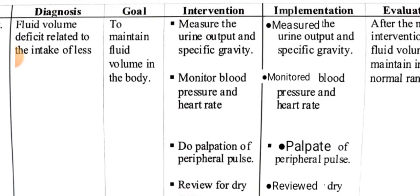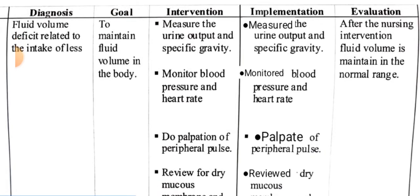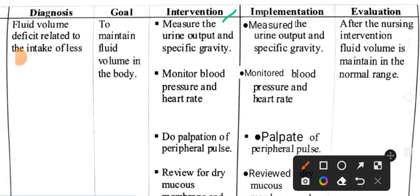The goal is to maintain fluid volume in the body. Next, interventions, implementation, and evaluation. First intervention: measure urine output and specific gravity. Implementation: measured urine output and specific gravity. Next intervention: monitor blood pressure and heart rate. Implementation: monitored blood pressure and heart rate.